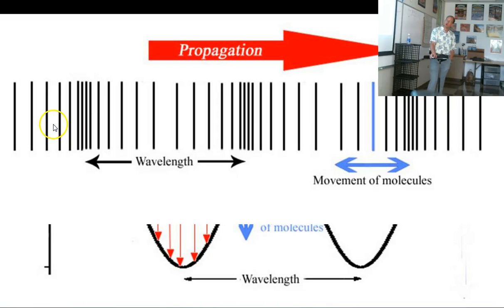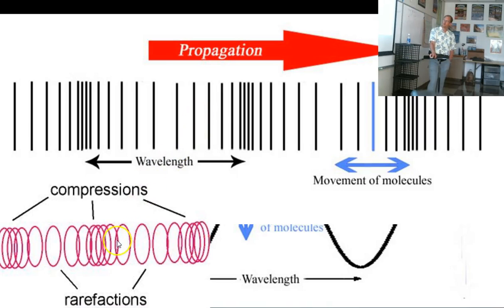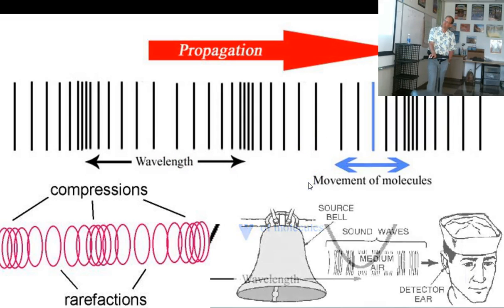Transverse goes up and down, longitudinal goes along the course of the wave. The wave is traveling this way, and then the molecules move and then stop and then move and then stop. The movement of the molecules is in the direction that the wave is going. That's a longitudinal wave. We name them areas of compression, where there's more particles per unit area, and then areas of rarefaction, where there are fewer particles per unit area. The wavelength is the distance from compression to compression, or from rarefaction to rarefaction.